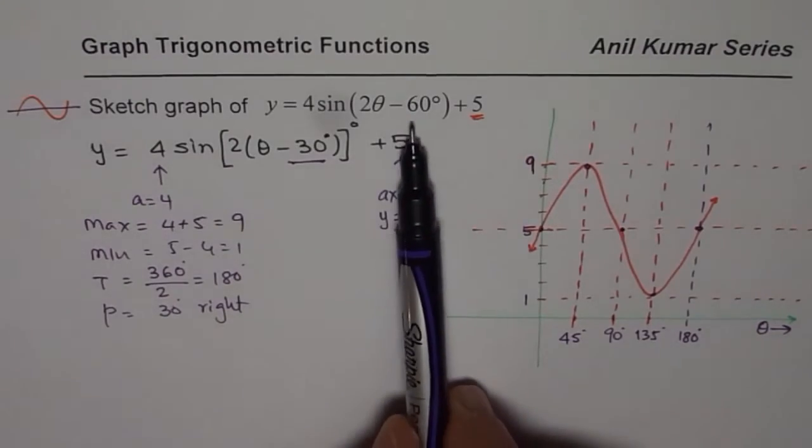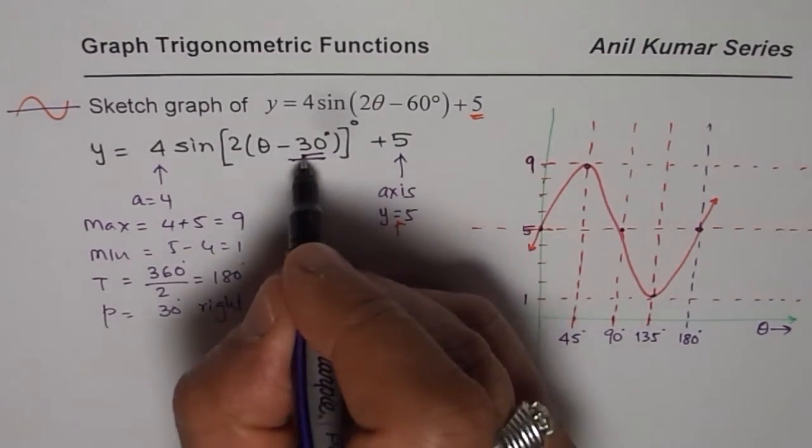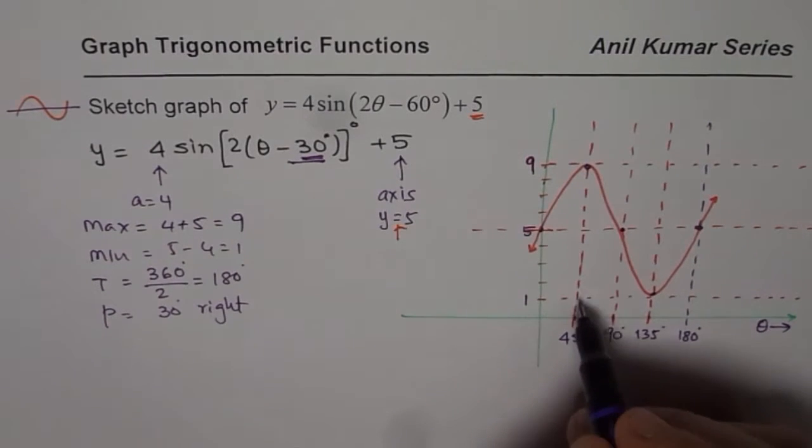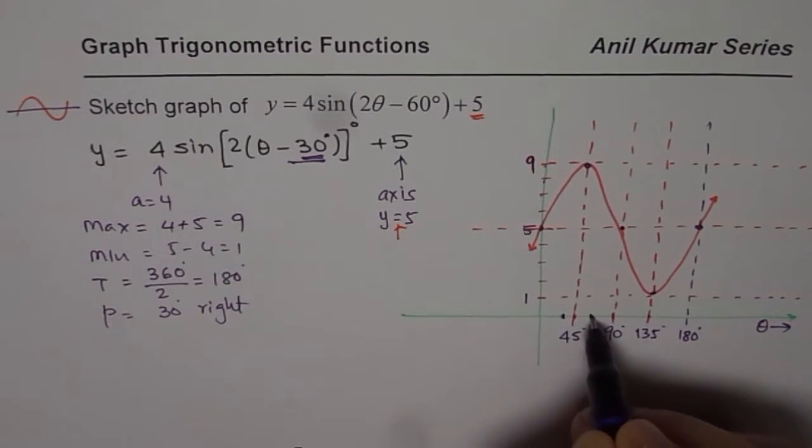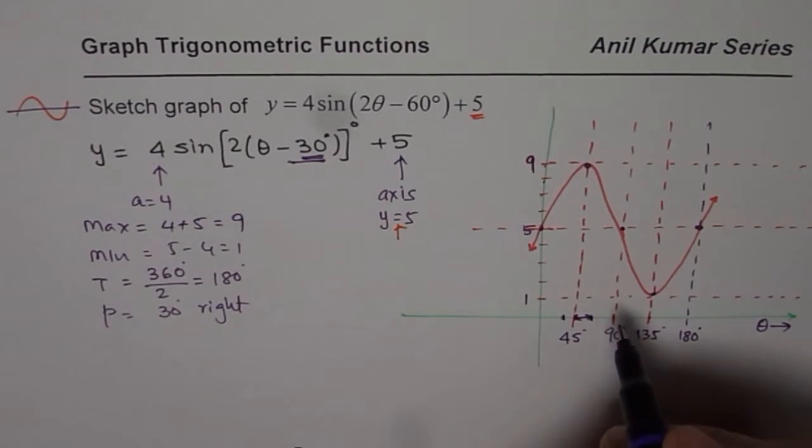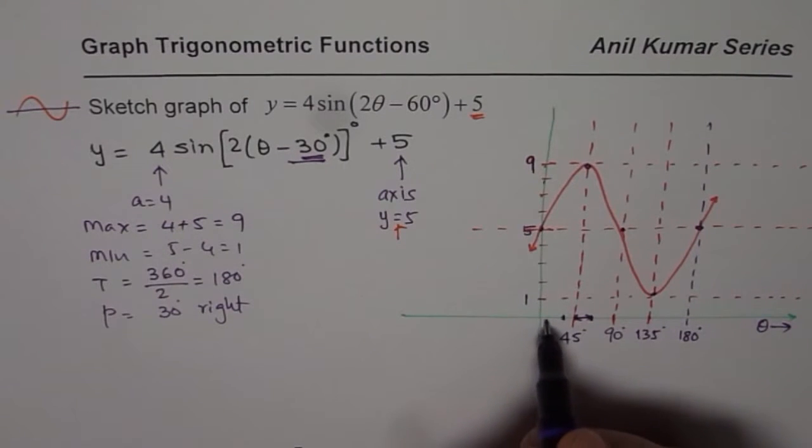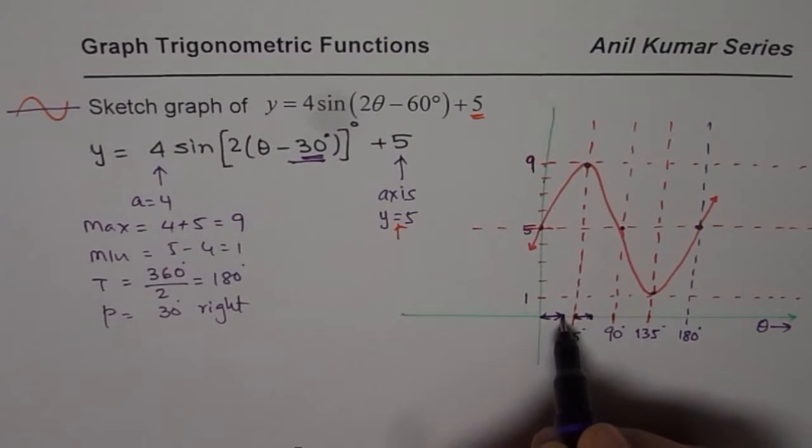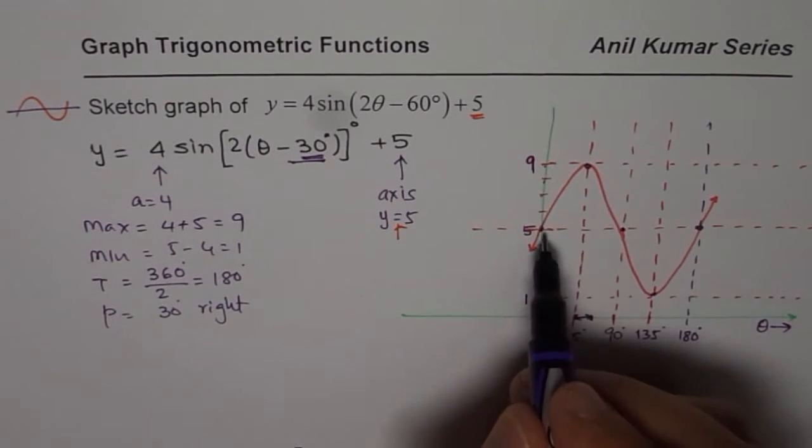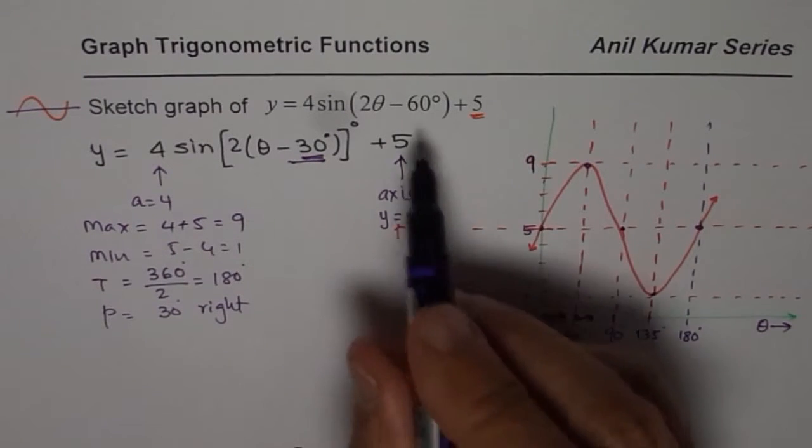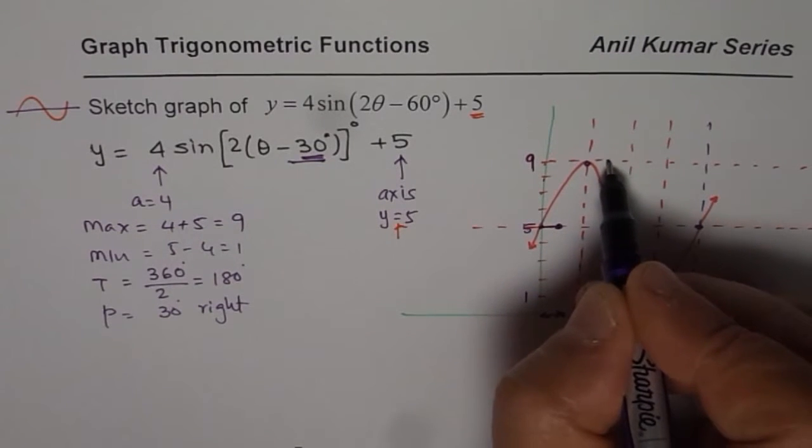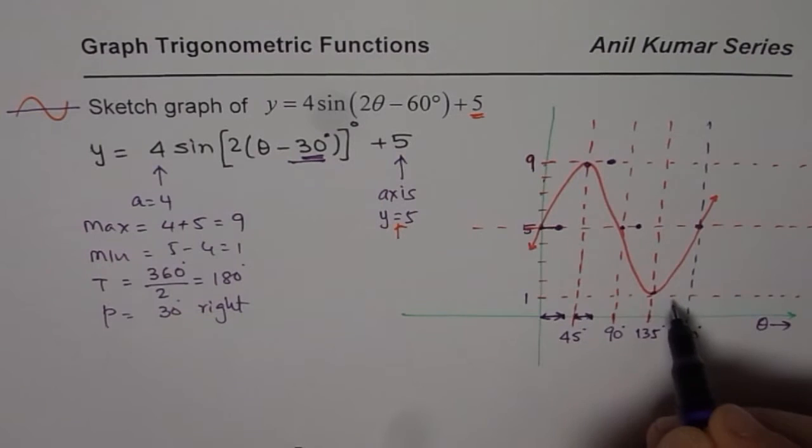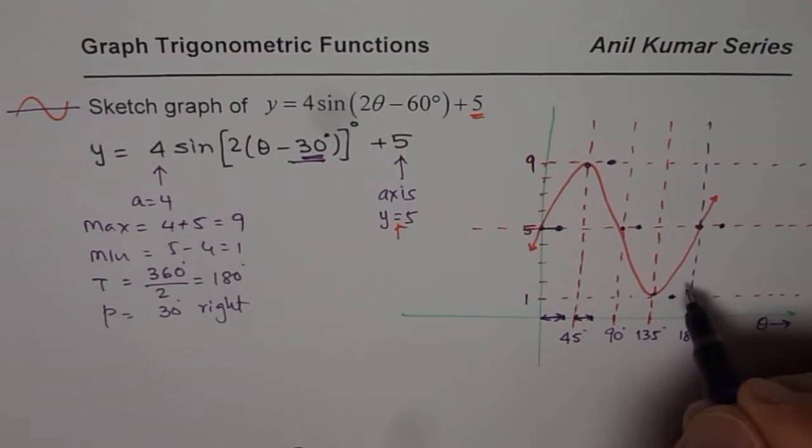But we have to incorporate the phase shift which is 30 degrees to the right. Here we are saying 45. So 30 is three divisions of 90. This much is 30 degrees for me. If I translate horizontally by 30 degrees I get my final result. Every point is moved 30 units to the right to finish my graph.